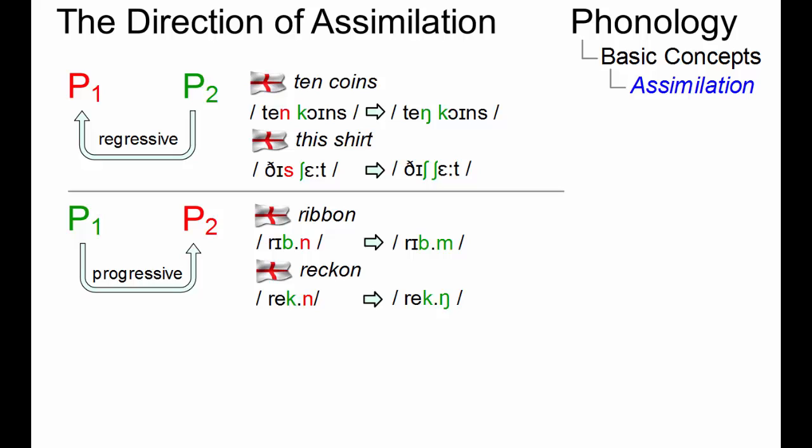Progressive assimilation, as in ribbon or reckon, typically occurs in those contexts where a syllabic N follows a bilabial or velar plosive.